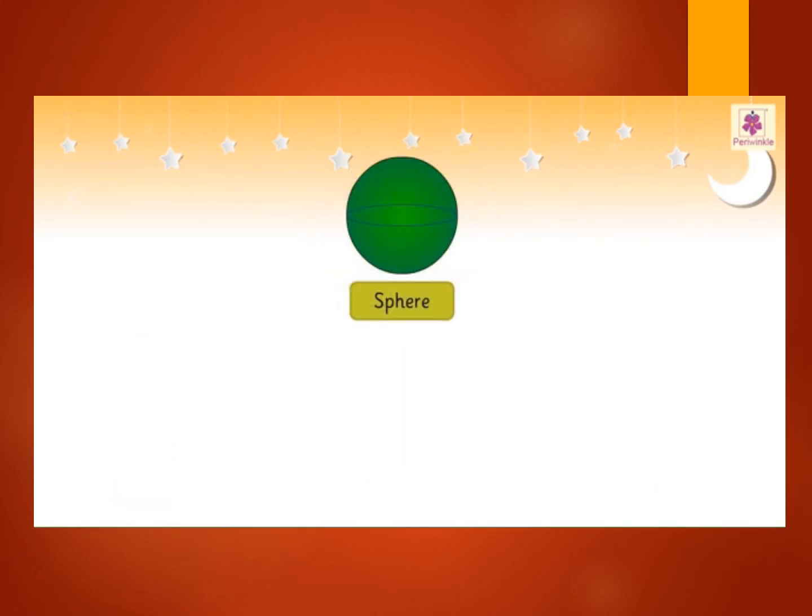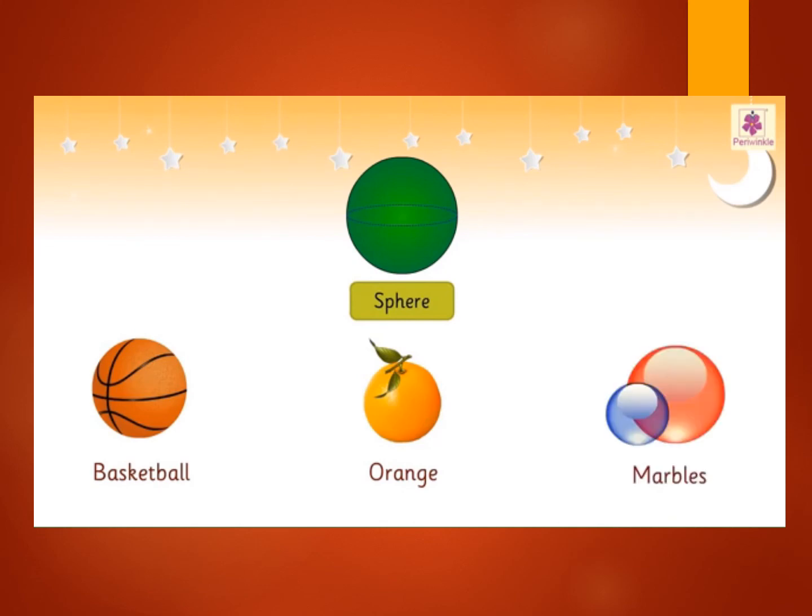This is a sphere. A basketball, an orange, and marbles are examples of a sphere.